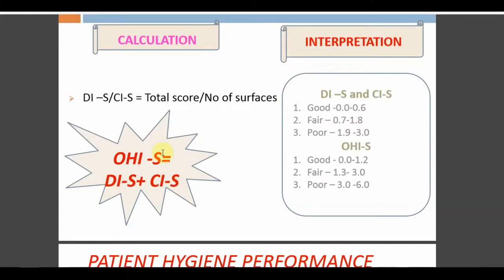The OHIS formula is: OHIS = DIS + CIS. DIS or CIS = total score divided by number of surfaces examined (6). Maximum score per surface is 3, so 6×3=18; 18÷6=3. So DIS and CIS each range from 0 to 3. OHIS ranges from 0 to 6. Unlike OHI which had both buccal and lingual on each tooth, OHIS has only one surface per tooth.